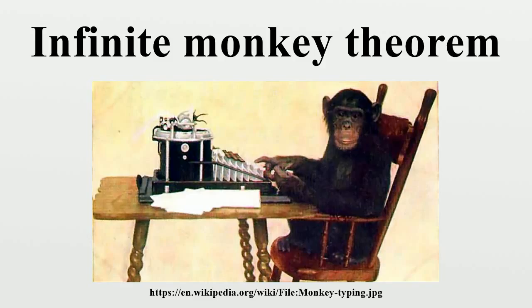Suppose the typewriter has 50 keys, and the word to be typed is banana. If the keys are pressed randomly and independently, it means that each key has an equal chance of being pressed. Then, the chance that the first letter typed is B is 1/50, and the chance that the second letter typed is A is also 1/50, and so on.